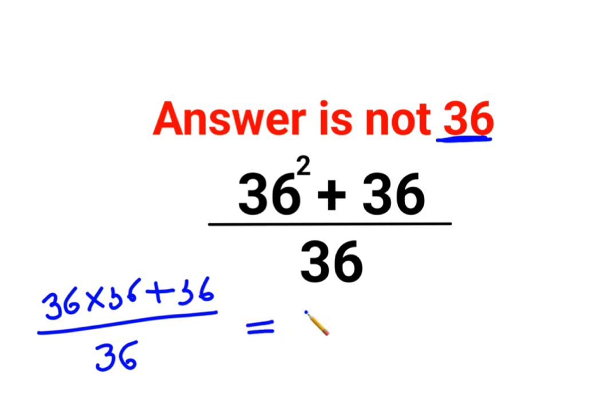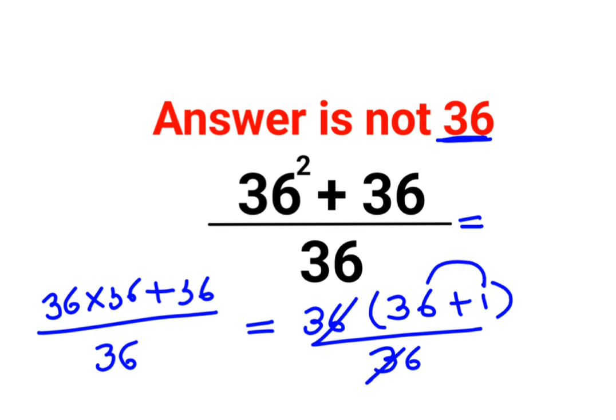So now what you can do is you will take 36 outside from the numerator. So then we have 36 plus 1 upon 36. So what happens is this gets cancelled and all you are left with is 36 plus 1.